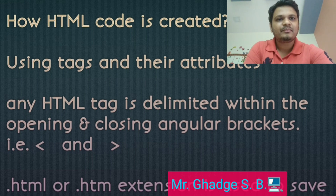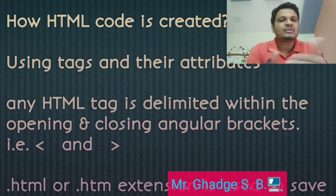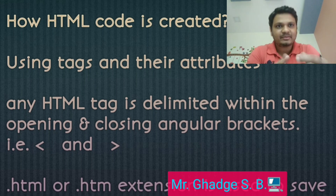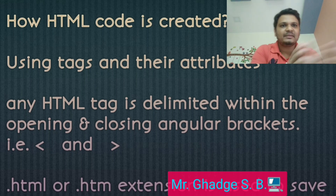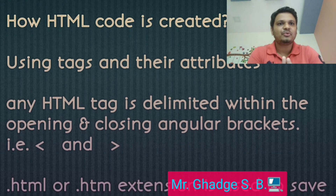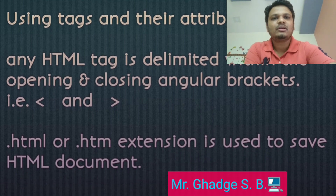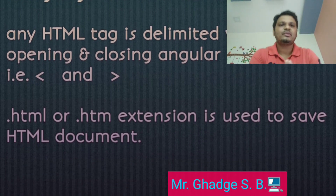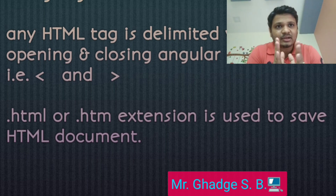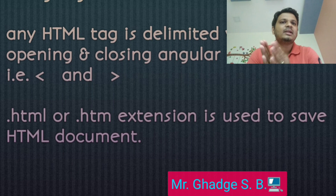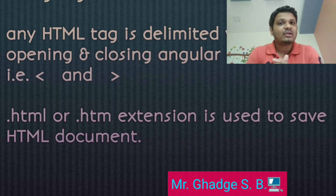Because of these angular brackets, the web browser can easily interpret and print the actual output. On a computer there are different types of file extensions for HTML files: dot html or dot htm.